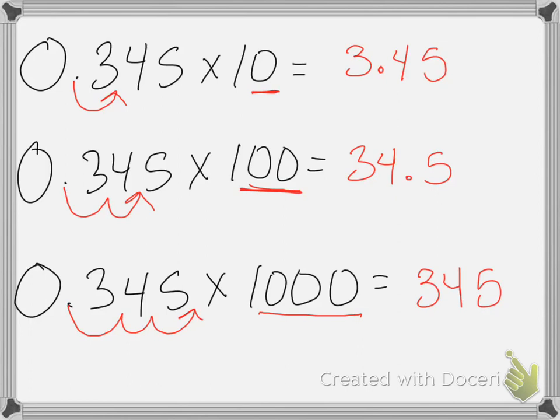So when you multiply a decimal by 10, 100, or 1,000, all you have to do is move the decimal place. And that's it for this lesson.